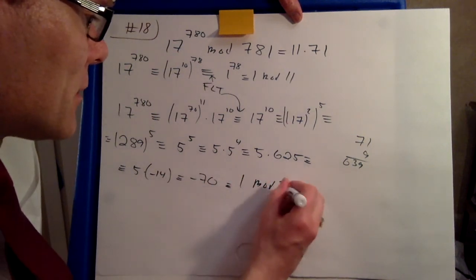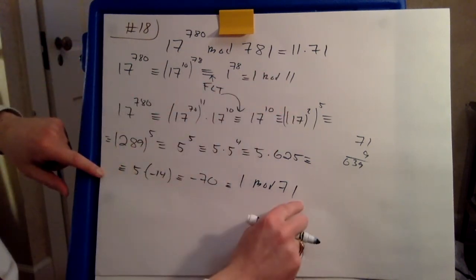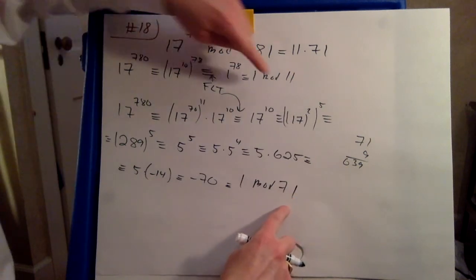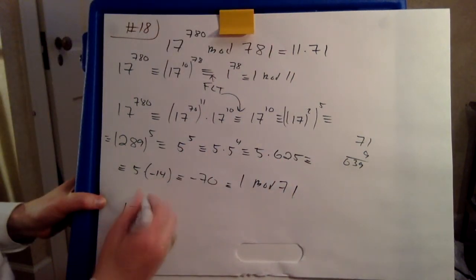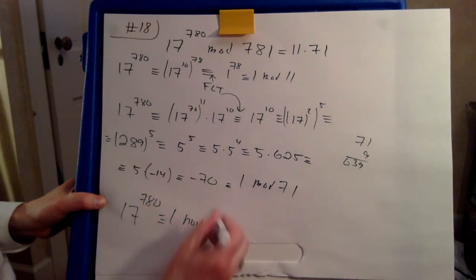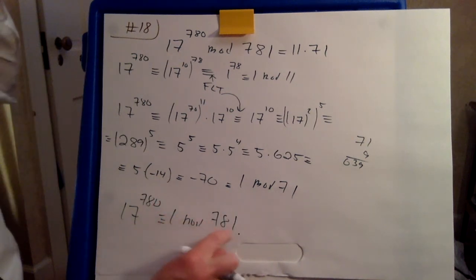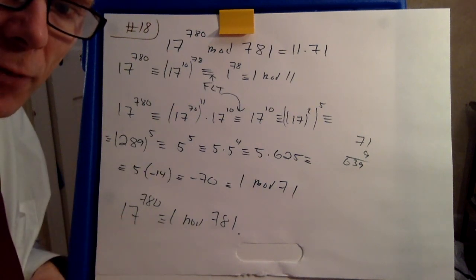So we put that statement and that statement together. Notice that these have no common factor here. We get exactly what we want. 17 to 780, minus 1, is minus 781. Hence, 781 is a 17 pseudoprime. And we get very happy for that.